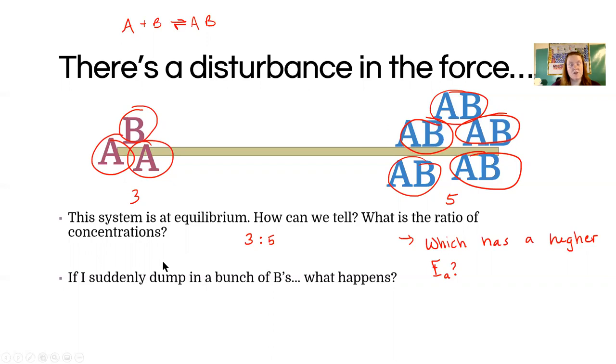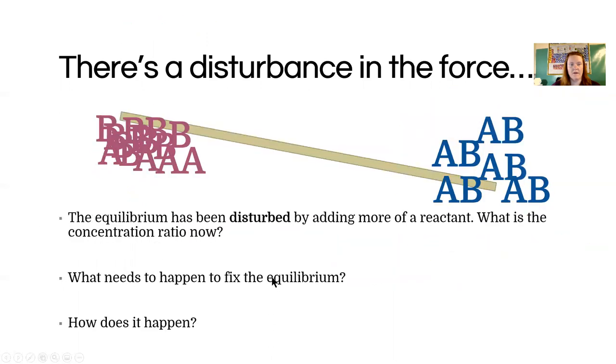But if I disturb that ratio, if I the chemist mess with it, what happens? Let's say I just dump in a whole bunch of B. That's a reactant. It's going to look like this, just a whole ton of it. Now we have an imbalance. This is not at equilibrium anymore because the forward reaction has to increase. If we have added reactant, it doesn't matter whether I add A or B, whatever reactant I pick. If I add it, it will cause product to form.